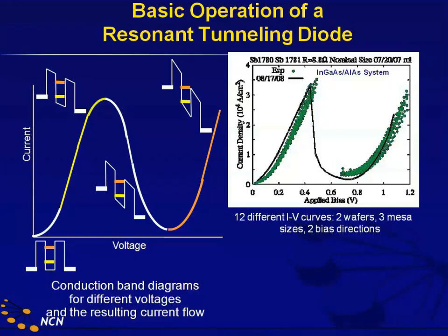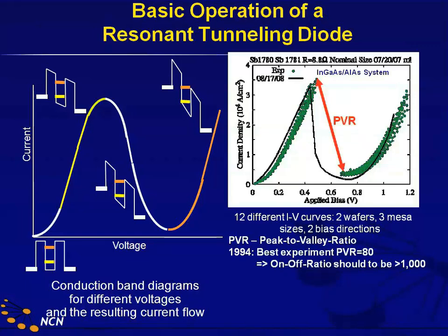What I'm showing you on the right is experimental data and a NEMO simulation in black. That's a real device — in fact there are 12 different IV curves from two different wafers, from three different mesa sizes, and two bias directions — that's all these green dots. The black line is a prediction made before the experiment. On the left you have Mickey Mouse diagrams of concepts; on the right you have real device simulation. In 1994, when the NEMO program started development, the peak-to-valley ratio — the best you could get was about 80.